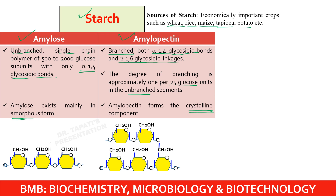The first picture shows amylose — an unbranched single-chain polymer of glucose with alpha-1,4 glycosidic links. The second picture shows amylopectin, which has both alpha-1,4 and alpha-1,6 glycosidic linkages present.